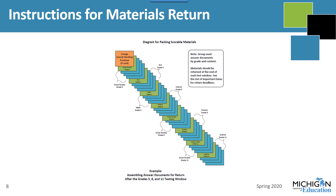There's a diagram in the TAM on page 68 that shows you how materials need to be packaged when getting them ready to be returned. Answer documents are packaged by grade and then by content area. For the grade 5, 8, and 11 window, package all grade 5 materials with science on the bottom, then math, then ELA, then social studies on top. Make grade-level stacks, then pack grade 11 on the bottom, grade 8 on top of 11, and grade 5 on top of that. If you have materials in the special handling envelope, that goes on top. Keep referring back to the TAM to make sure everything is packaged correctly.